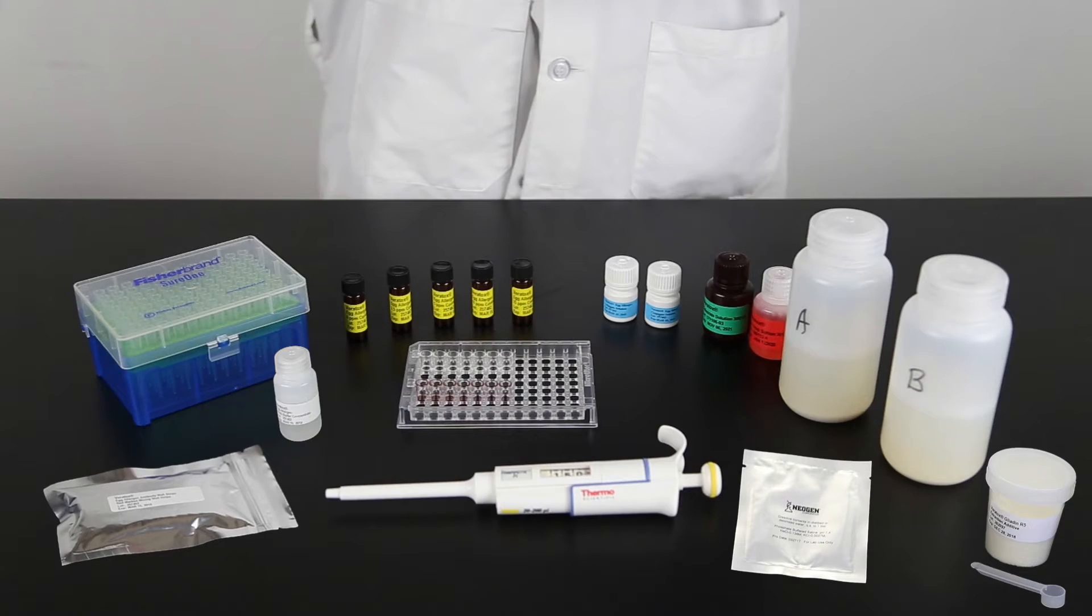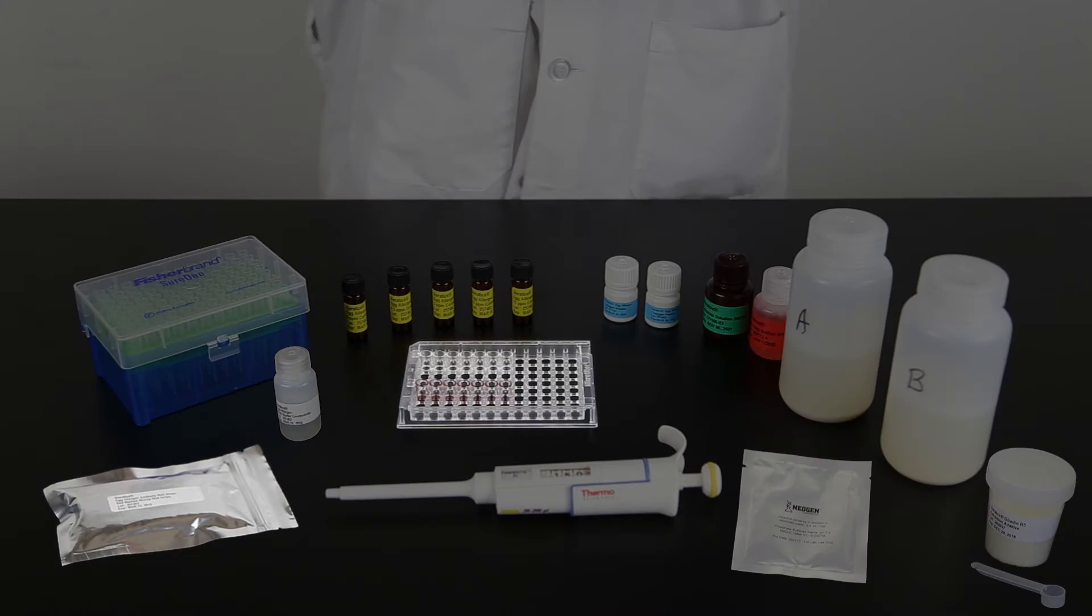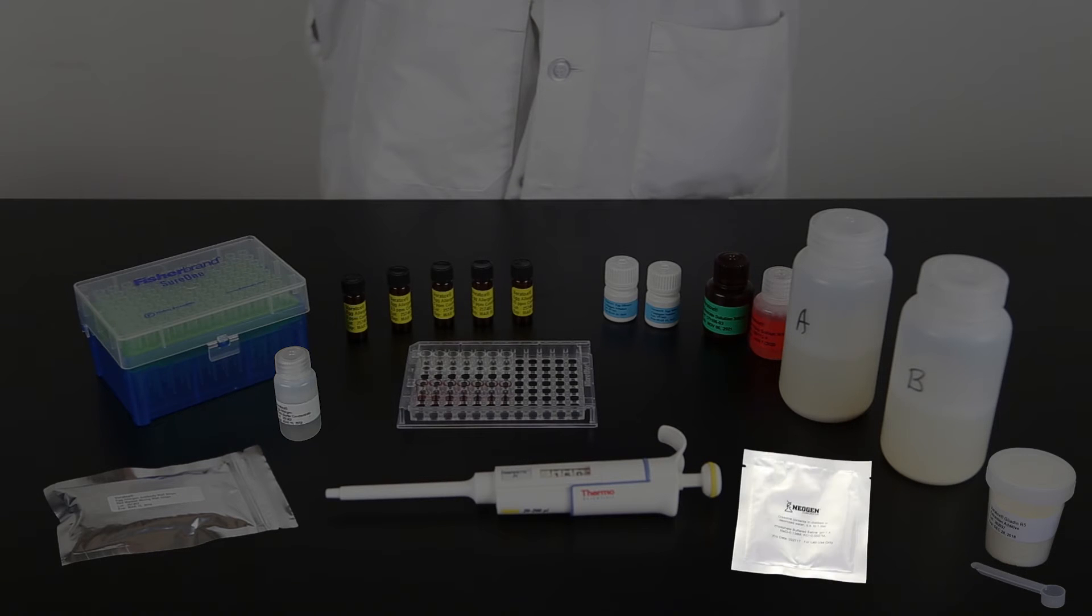Each Veritox kit for allergens contains a foil pouch containing clear antibody coated wells and red marked transfer wells, up to six yellow labeled vials containing the range of controls, blue labeled bottle containing conjugate, green labeled bottle containing substrate, red labeled bottle containing red stop, small foil pouches containing PBS powder, wash buffer concentrate, and extraction additive with scoop.